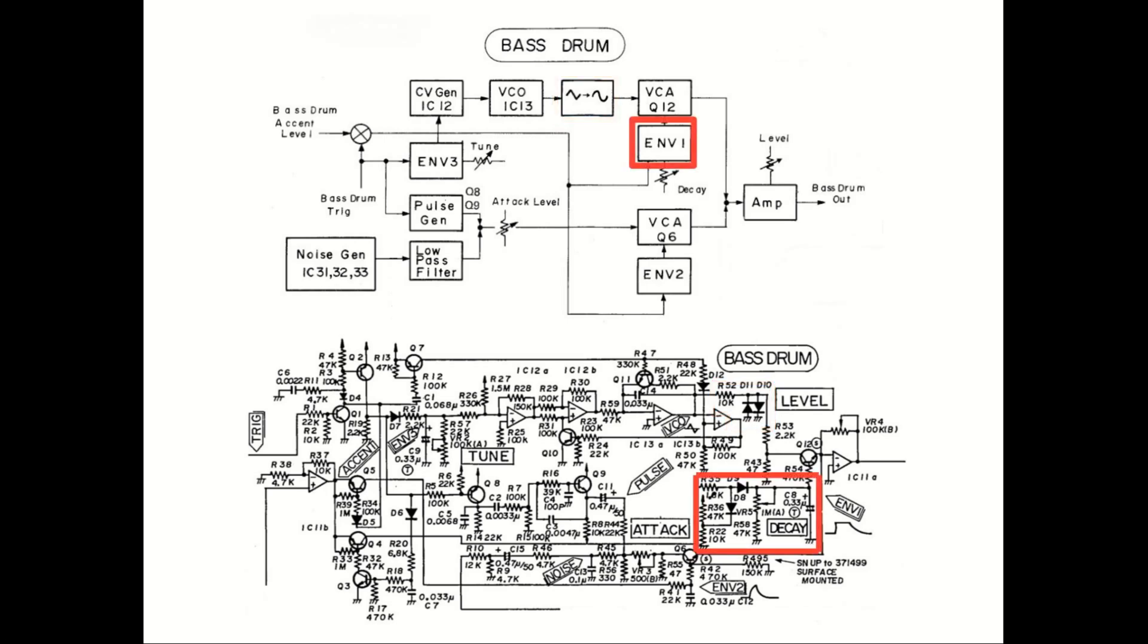The envelope generator 1 is a simple RC network where the charging is timed using a biasing network, and the discharge is controlled by the decay pot. The VCA that is connected to the envelope 1 is just a NPN transistor operating in linear range, and the output is routed to a summing bus leading to the output amplifier.